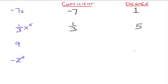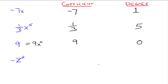Now we're going to throw in the number 9 — we're missing the variable x. But we can think of 9 as 9 times x to the 0 power, because x to the 0 is the same thing as 1. So the coefficient would be 9, but the degree of this monomial would be 0, because that's the degree on the variable x — it's just not written. If the variable's missing, the degree is 0.